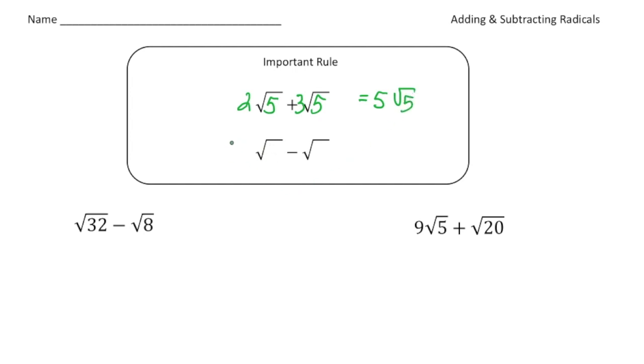How about another one? If I had 10 radical 3 minus 2 radical 3, again, because what's inside the radical sign is the same, you subtract what's in front. So 10 take away 2 is 8, and that's 8 radical 3.